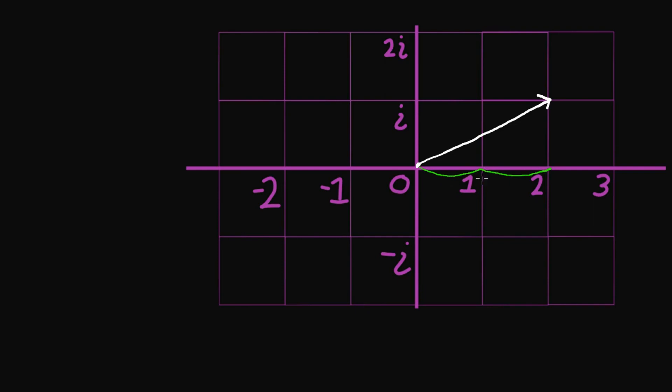So over here I have 2 coming from this one. And then I would walk up i. So an i over here. So we end up computing that this number is 2 plus i.